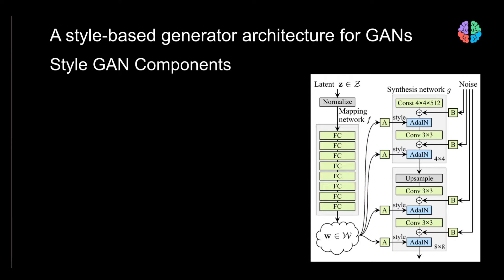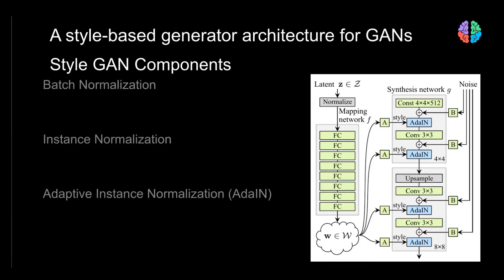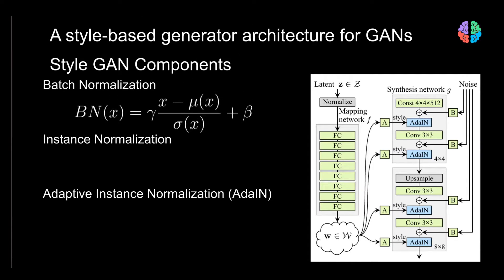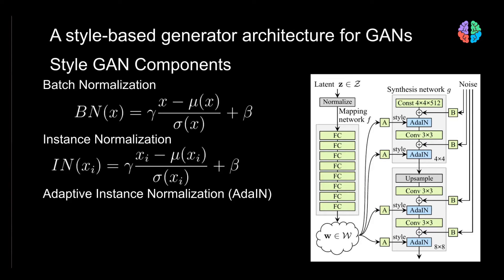A key contribution of StyleGAN is adaptive instance normalization. Before understanding it, let's briefly look at batch normalization. Adaptive instance normalization is derived from batch normalization. In batch normalization, you have input x, and it computes the mean and standard deviation of x, along with parameters gamma and beta — the scale and translation factors. Instance normalization is a breakdown of batch normalization for a specific instance xi of a batch, treating each sample separately.